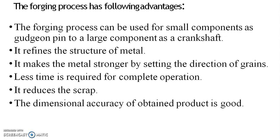The forging process has several advantages: it can be used for small components such as a gudgeon pin up to large components such as a crankshaft. It refines the structure of metal and makes it stronger by aligning the direction of grains. Less time is required for the complete operation, it reduces scrap, and good dimensional accuracy of the product is achieved.